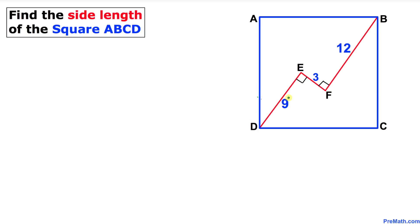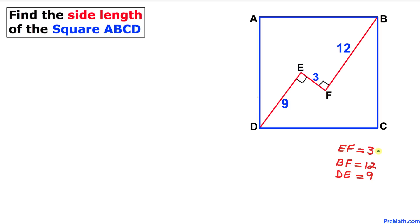Welcome to pre-math. In this video tutorial we have got square ABCD such that we have line segment EF perpendicular to two other line segments BF and ED. We are going to calculate the side length of square ABCD. Our line segment EF is 3 units, line segment BF is 12, and DE is 9.